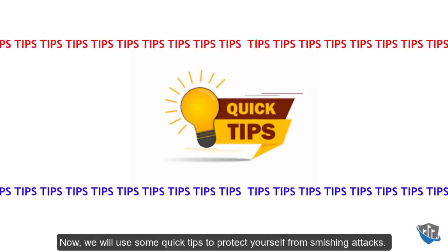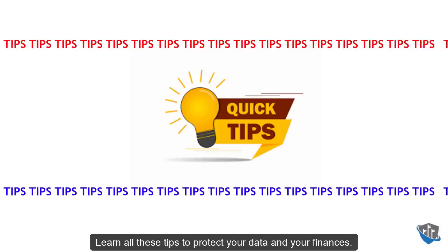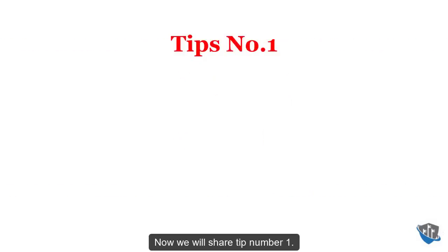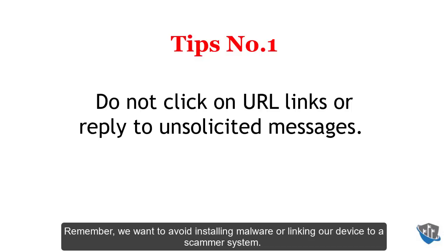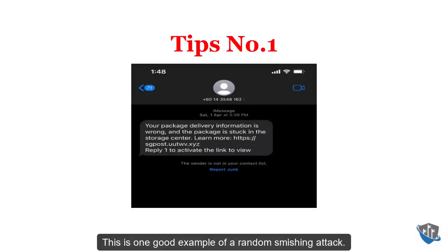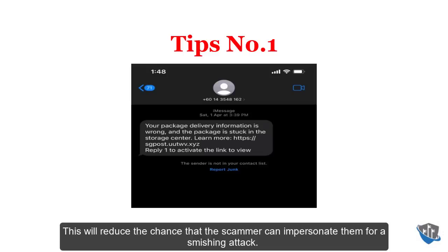Now we will use some quick tips to protect yourself from smishing attacks. Tip number 1: please do not click on URL links or reply to unsolicited messages. We want to avoid installing malware or linking our device to a scammer's system. Note that in many countries, banks will not send SMSs or emails with clickable website links, which reduces the chance that scammers can impersonate them for a smishing attack.